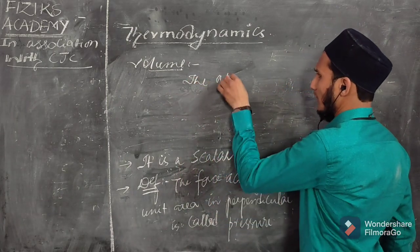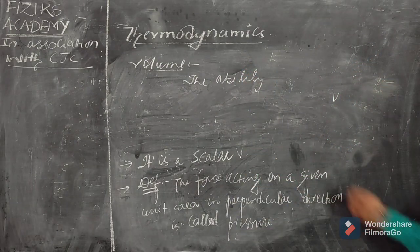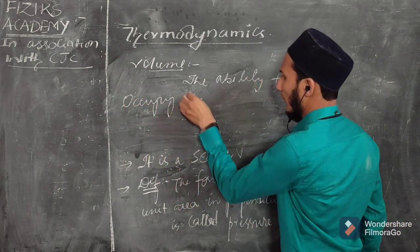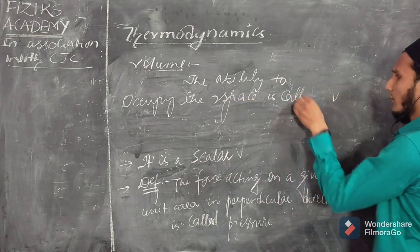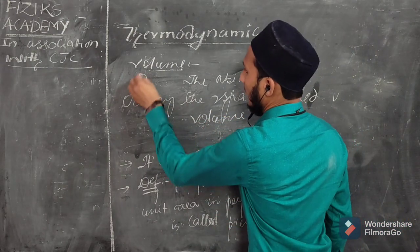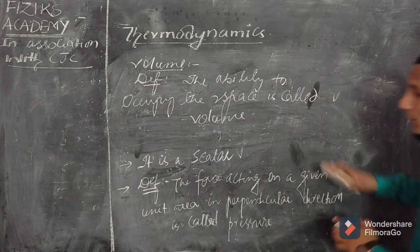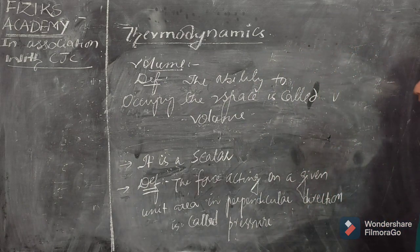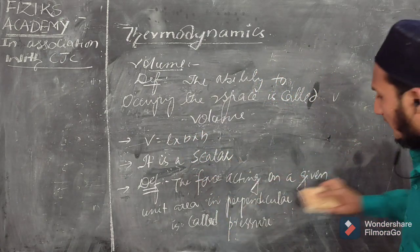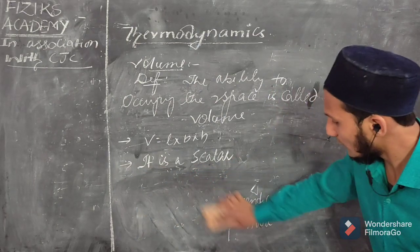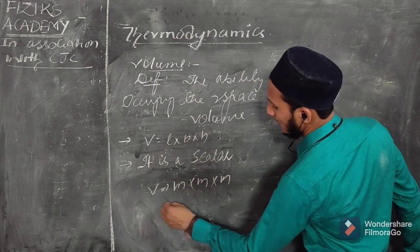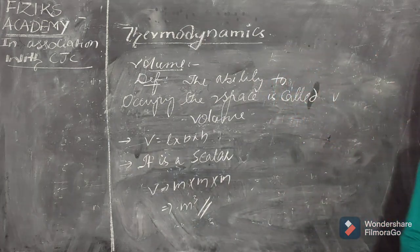The ability to occupy space is called volume. The formula for volume is: Volume equals length times breadth times height, or L×B×H. Volume is a scalar quantity. Its unit is metre times metre times metre, which equals metre cube, or cubic metre.